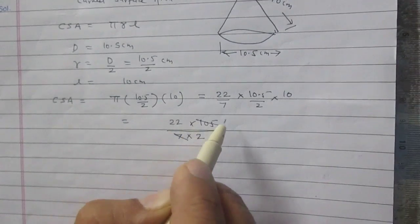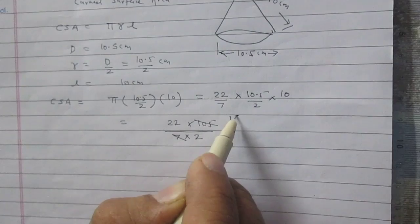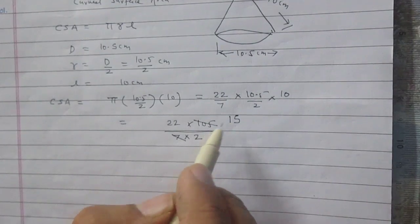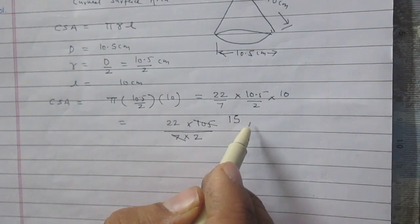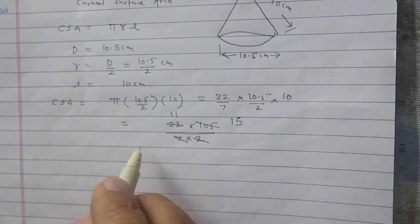So 7 and 105 can be cancelled as 15 into 7 is 105, 2 into 11 is 22.